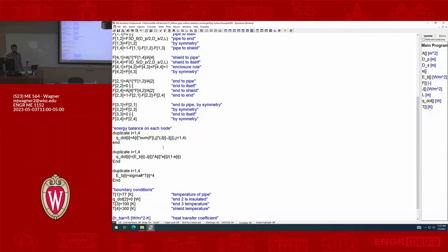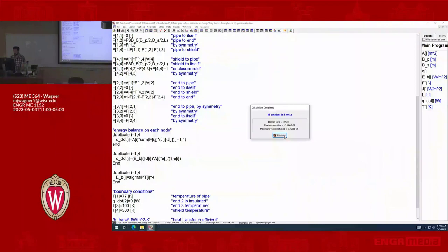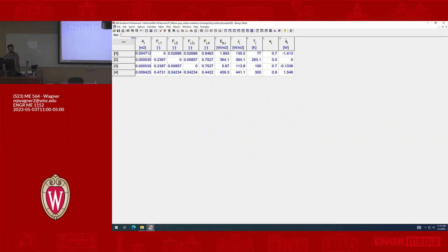So it's actually really pretty straightforward to implement. Let's look at the solution and just kind of see what's going on. So we can solve this. Looking in the arrays, we had our view factors, we have our emissive power, and now we have radiosity.